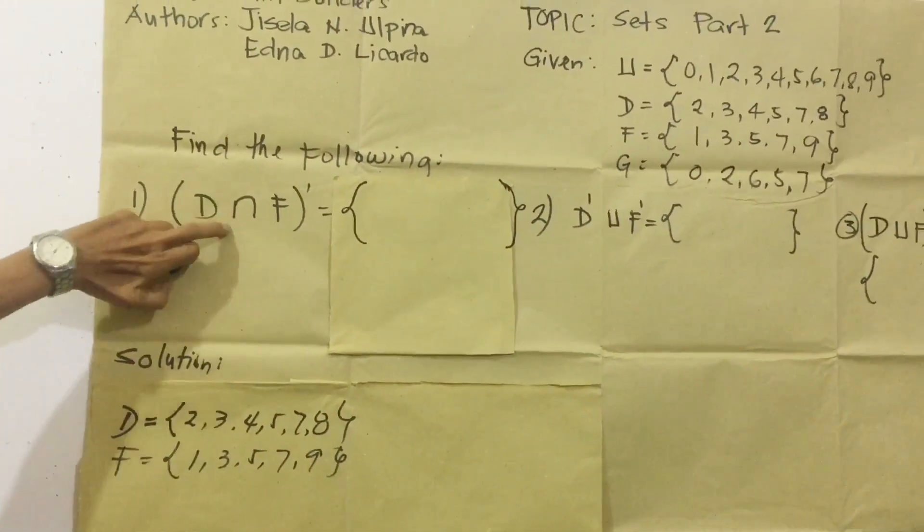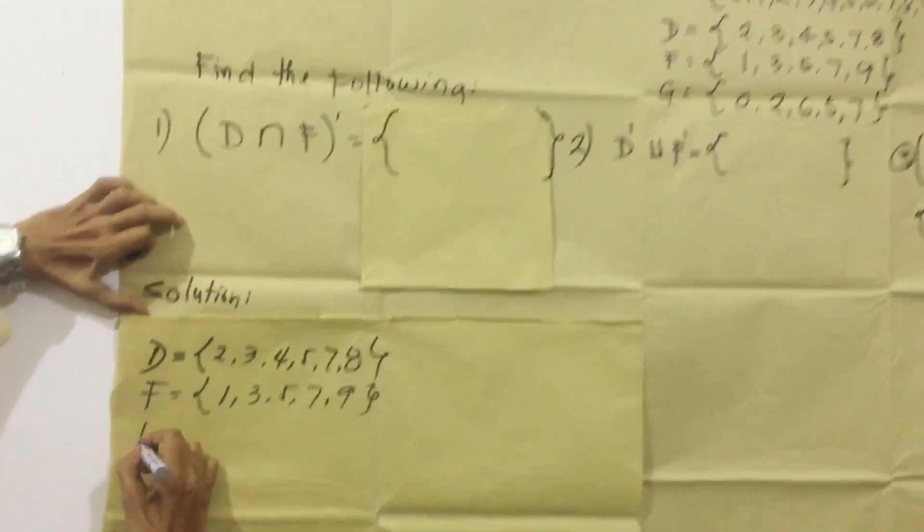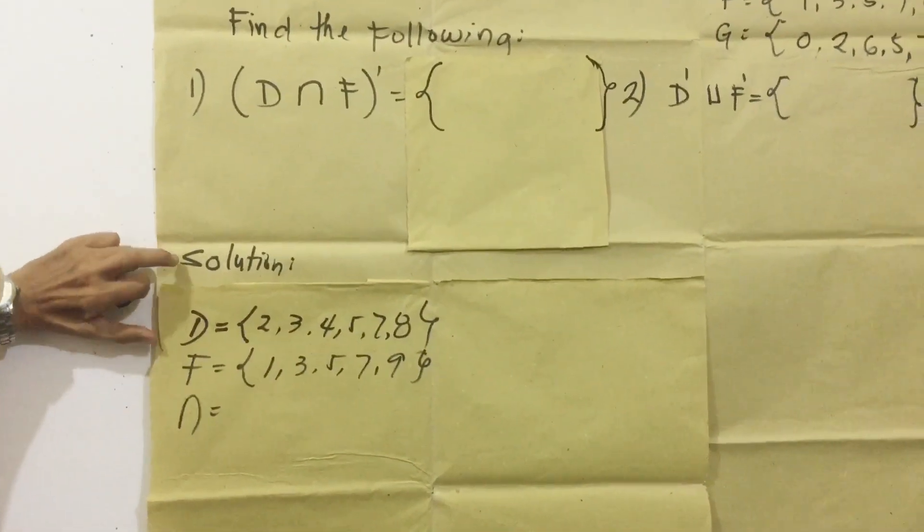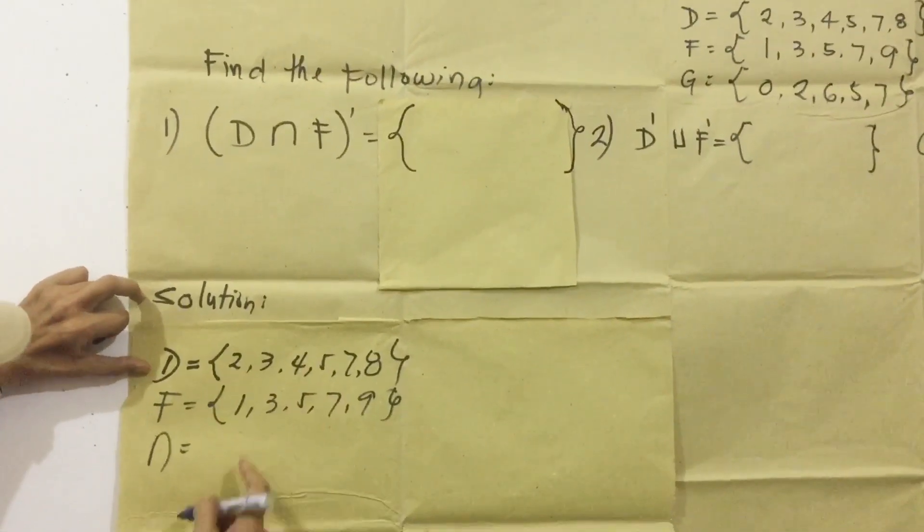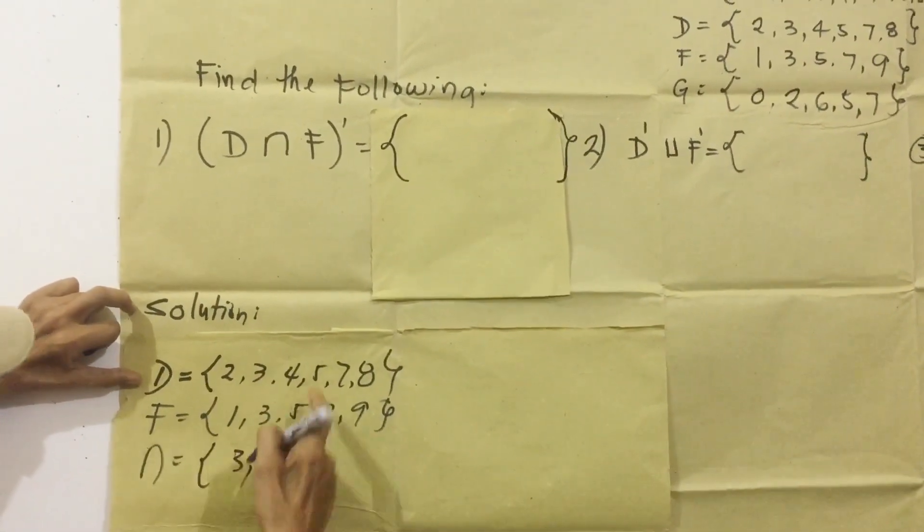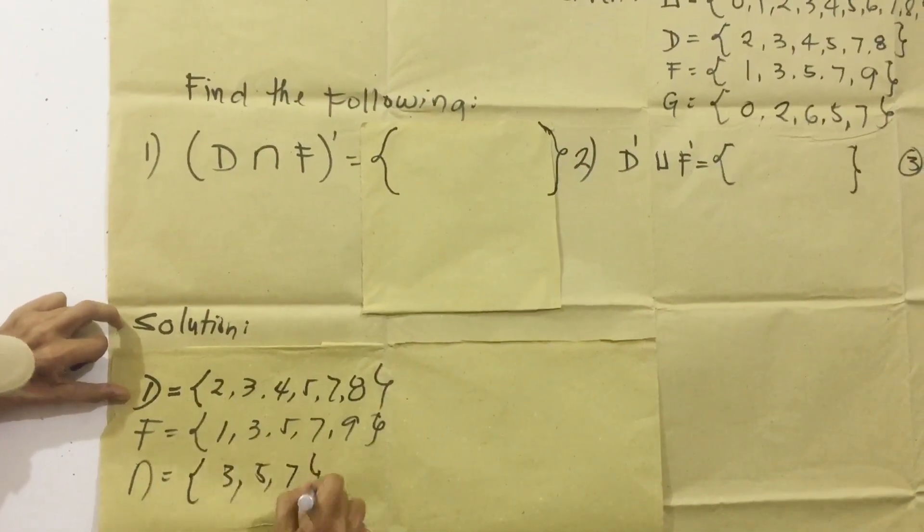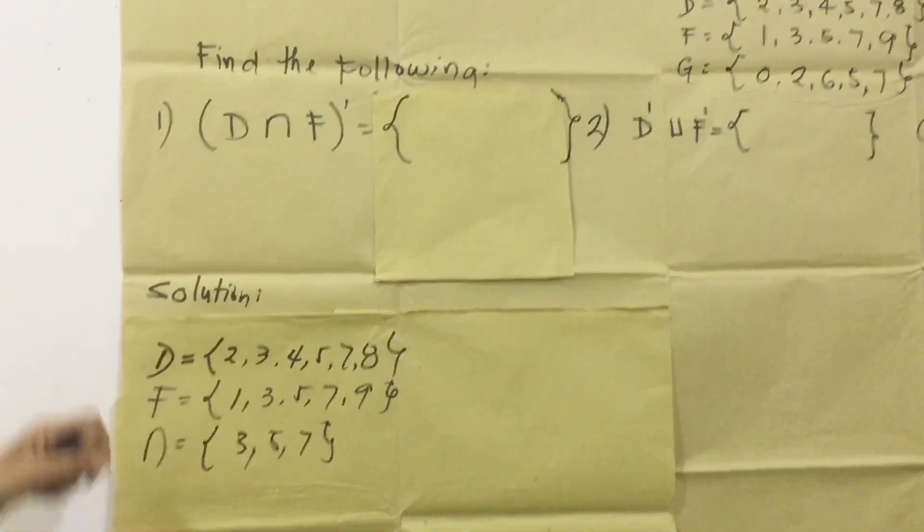So, ang susunod ay kopyahin natin yung intersection. Yung intersection dito, ito ibig sabihin yung common. Ang common are the same: 3, 5, and 7. So ngayon, pakuha na natin ito.